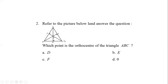Number two: From the figure, find which point is the orthocenter of triangle ABC. The intersection of the perpendicular lines in any triangle is the orthocenter. Here, AD is perpendicular on BC, CF is perpendicular on AB, and BE is perpendicular on AC. They intersect at point O. So our required orthocenter is O.